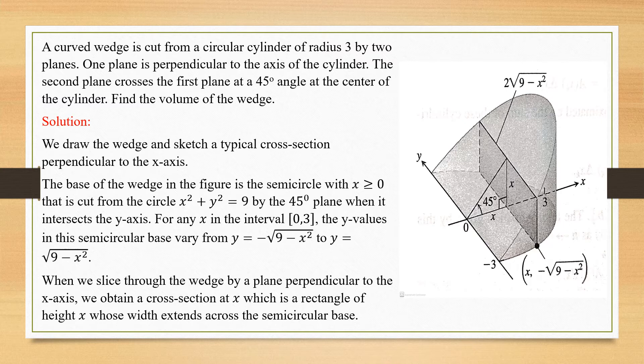The semicircle is cut from the circle x² + y² = 9. The cylinder has a circular base and the cylinder radius is 3, so the circle equation gives radius squared as 9, hence x² + y² = 9. By the 45 degree plane when it intersects the y axis, both planes intersect each other — the first plane cuts horizontally perpendicular to the cylinder and the second plane comes at 45 degrees; both intersect on the middle line axis.